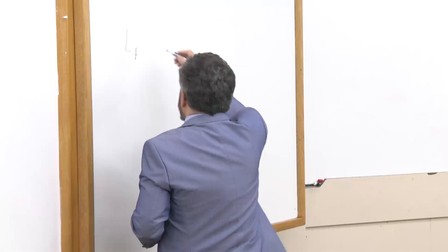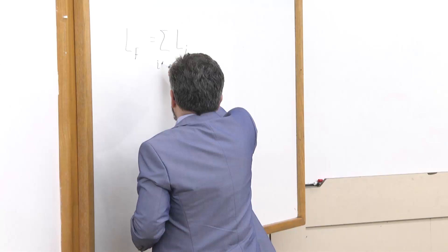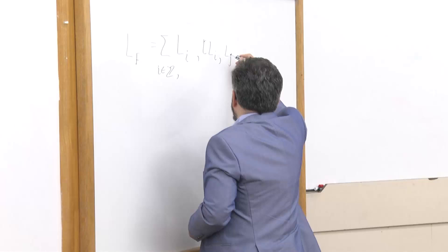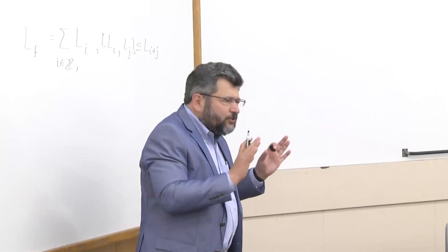Suppose that we have a Lie algebra L over a field F, and suppose that it is Z-graded — a direct sum of subspaces indexed by integers. Z-graded means that whenever you multiply the I-th and J-th components, the indices add. Once we want to study infinite dimensional objects, let us start with those that grow not too fast.